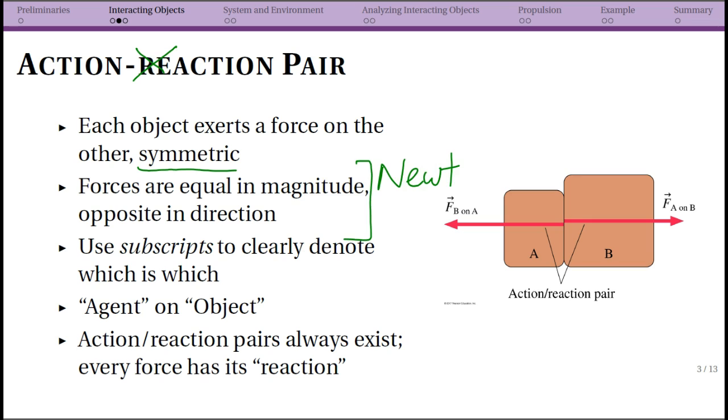So this is going to come back when we talk about Newton's third law, good old Newton. But they are equal in magnitude, opposite in direction. So what does that mean? So in this case, you see that you have one force to the left, and you have a different force to the right, and they are the same size.